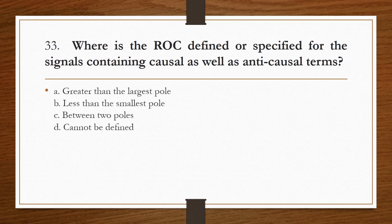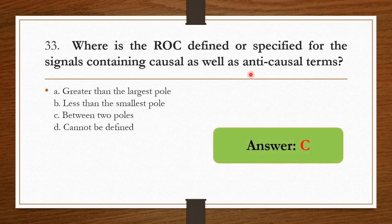Where is the ROC defined for signals containing causal as well as anti-causal terms? If you have both causal and anti-causal components, the ROC will be between the two poles. So option C is the right answer.